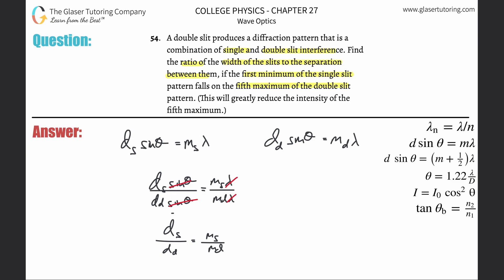Now, this is basically what we're trying to find. This is what they're asking for, the ratio between the single slit width and the double. And that's going to be equal to the order of the single, the minimum. Because remember, for a single slit, that formula was for a minimum.